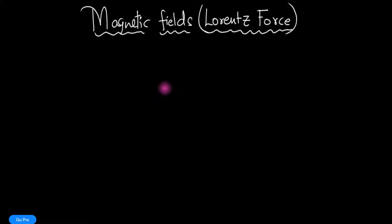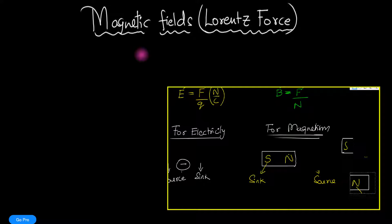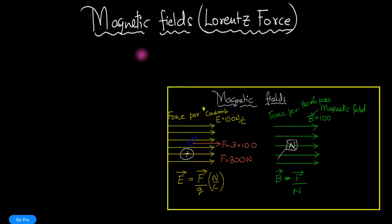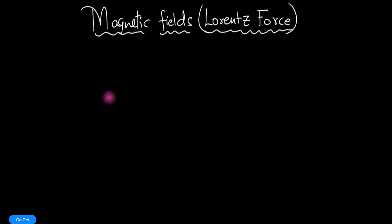Welcome to another episode on magnetic fields. Last time we saw how not to define a magnetic field — we cannot define it the same way we do for the electric field. The reason is that you cannot separate a monopole; you don't have something called a north pole or a south pole alone — it's always a dipole together. And because of that, we were in trouble.